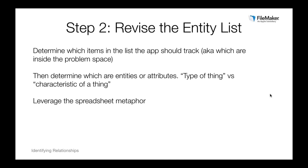For example, you wouldn't need to track a dashboard — that's something inside your application, not something you track. But you would need to track orders because they want an order entry system. Once you've gotten your list of things you want to track, you need to determine which are entities and which are attributes. Entities are a type of thing, versus attributes, which are the characteristics belonging to that thing. When in doubt, check with your client — ABC Automotive is going to know which things they care to track.